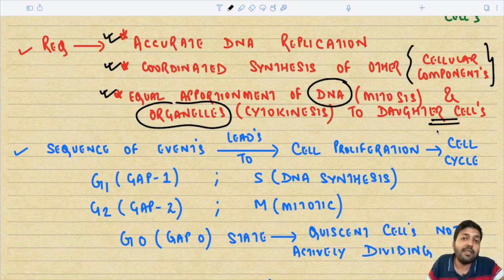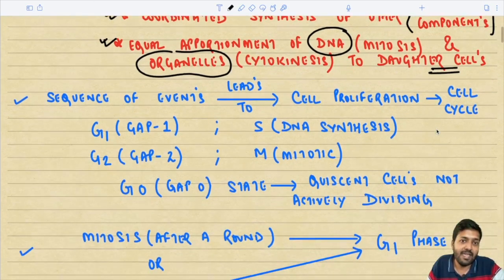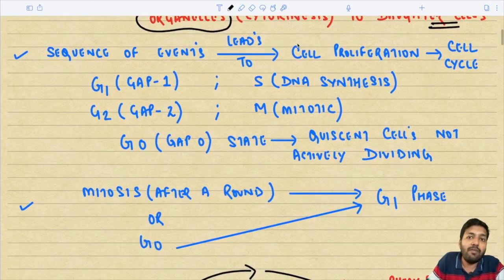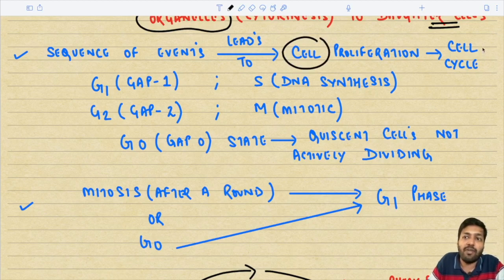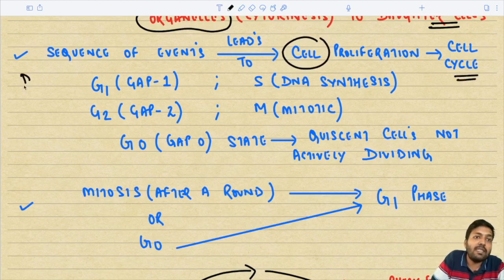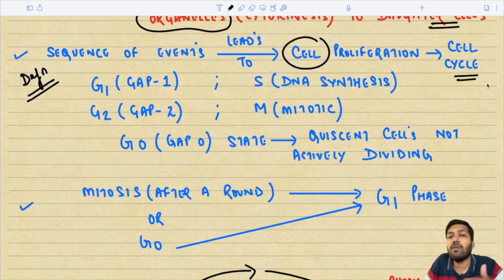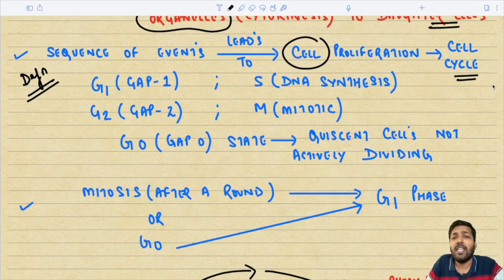All the sequence of events leading to cell proliferation is called the cell cycle. The definition: it is the sequence of events which leads to cell proliferation.